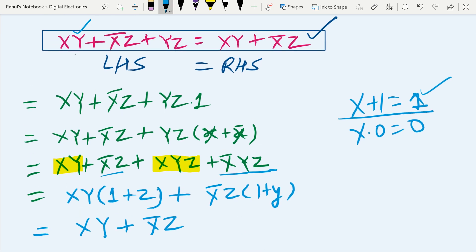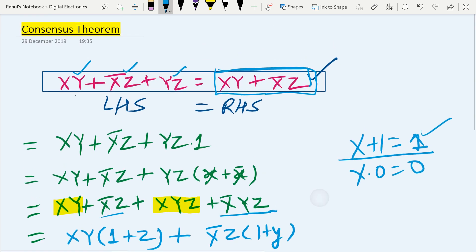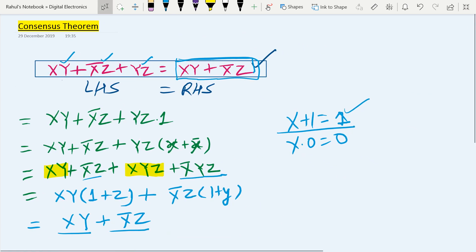If you observe here, xy plus x prime z plus yz becomes xy plus x prime z, which is the right hand side part. So it is a very easy proof of the consensus theorem. You can solve questions directly if you observe such kind of equation - you can easily replace it with this one.